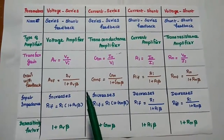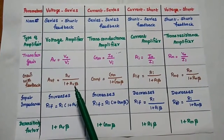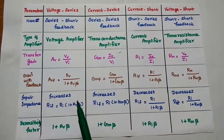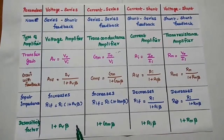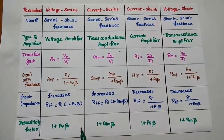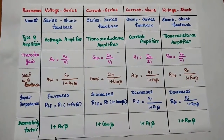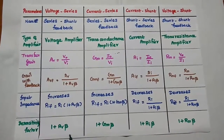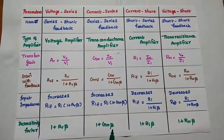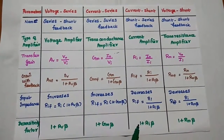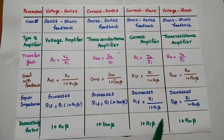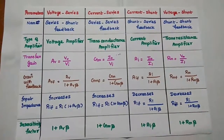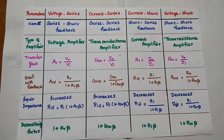The denominator value of the gain expression is represented as the desensitivity factor. That is: (1 + Av·β) for series-shunt, (1 + Gm·β) for series-series, (1 + Ai·β) for shunt-series, and (1 + Rm·β) for shunt-shunt.